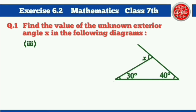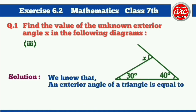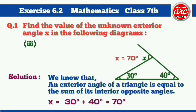Part 3 solution: As we know, an exterior angle of a triangle is equal to the sum of its interior opposite angles. X is equal to 30 degrees plus 40 degrees, which is equal to 70 degrees. Hence, angle X is equal to 70 degrees.